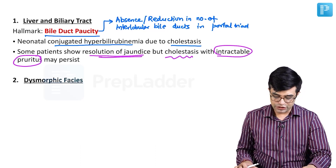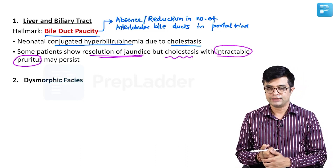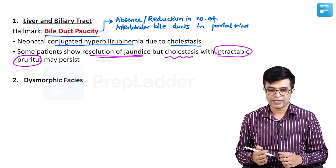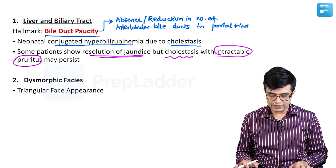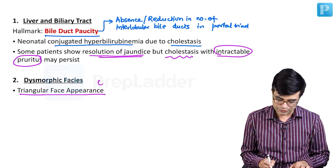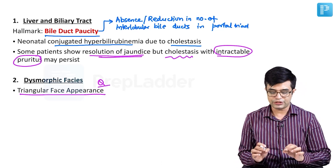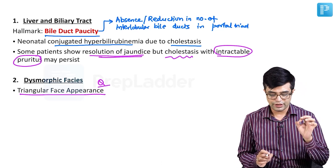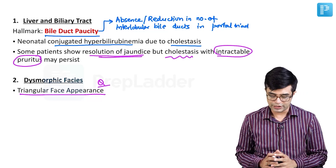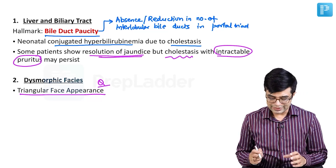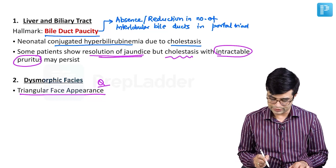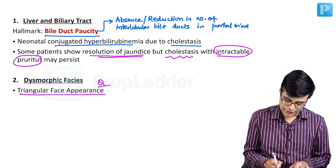The second feature is dysmorphic facies. These children are found to have facial dysmorphism producing a face called triangular face appearance — a potential MCQ point. The question 'triangular face is a feature of which hepatic syndrome?' — the answer is Alagille syndrome.